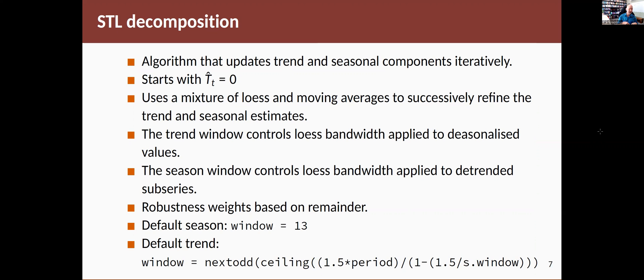And then it removes that and tries to estimate the trend using a Loess curve, a smooth locally linear curve. And then it removes that and then tries to do the seasonal term again. And it iterates between those two, successively getting more accurate or better refined estimates of both trend and seasonal components.